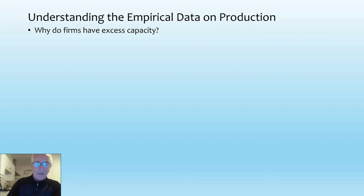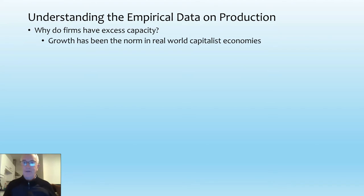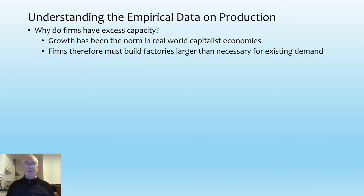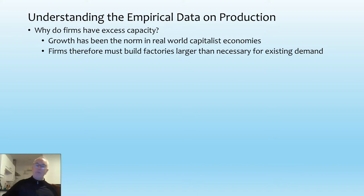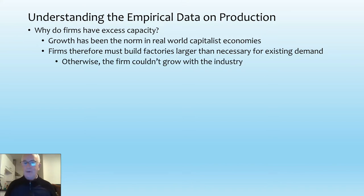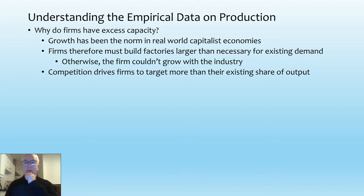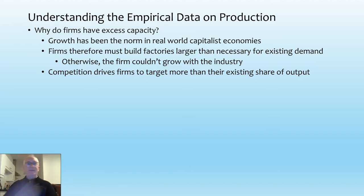Why do firms start with excess capacity? Simply because growth has been the normal situation for capitalism — all firms expect to be growing in a growing industry. When you build a factory, it must be larger than existing demand. If you build a factory only big enough for your current demand — 100% utilised on day one — you've got to build another factory immediately. So the sensible thing is to build factories larger than is necessary for existing demand. If you're all doing it, you've all got more capacity than is necessary for the industry. Competition also drives firms to try to produce more than their existing share of output — if you're a Toyota with 30% of the car market, you want to grow to 35%.